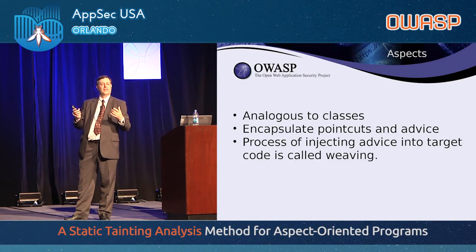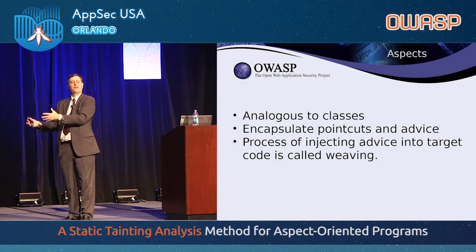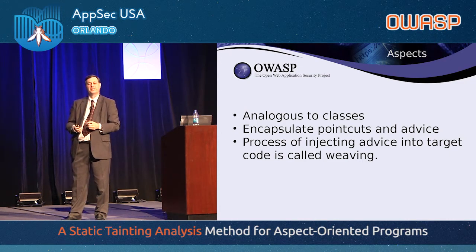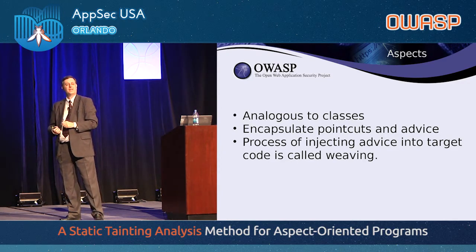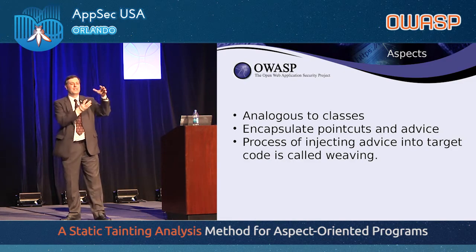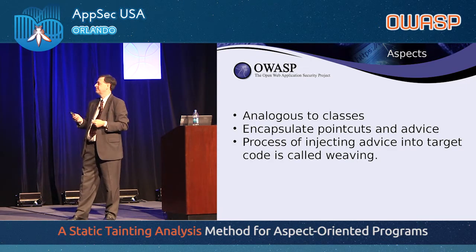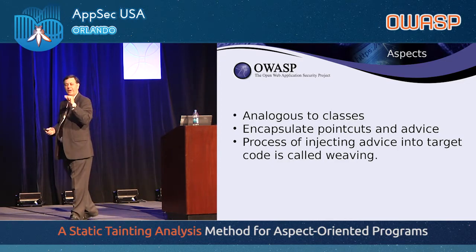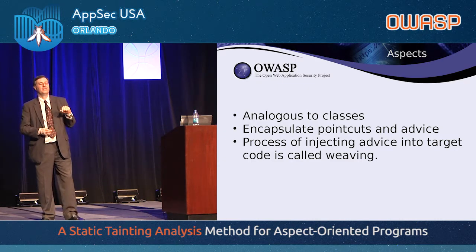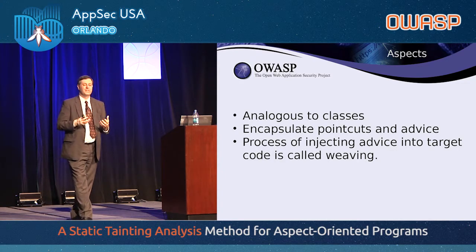Aspects then are analogous to classes. They take the join points and the advice and package them up in a neat package — similar to how a class packages up all of your properties and methods. We want to put all of our logging into one aspect, our database transaction management into an aspect, and our authorization into an aspect. Then we say, I want to do these things at specific join points using the point cuts. The process of doing that is called weaving, and the compiler takes care of putting your logging in the right places.